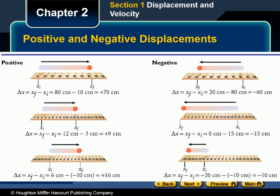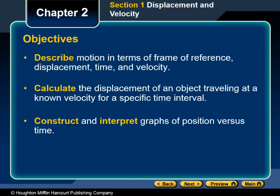Displacement can be positive or negative. Displacement also includes a description of the direction of motion. In one-dimensional motion, there are only two directions in which an object can move, and these directions can be described as positive or negative. In this course, unless otherwise stated, the right or east will be considered the positive direction, and the left or west will be considered the negative direction. Similarly, upward or north will be considered positive, and downward or south will be considered negative. Figure 1.4 on page 40 of your text or on the screen gives examples of determining displacements for various situations. At this point, you should be starting to be able to describe motion in terms of frame of reference, displacement, time, and velocity, calculate the displacement of an object traveling at a known velocity for a specific interval, and construct and interpret graphs of position versus time.